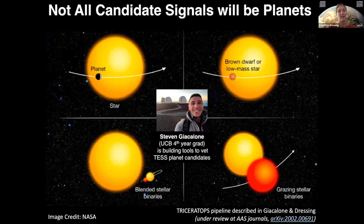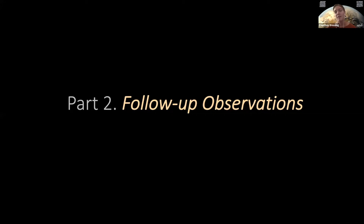TESS is set up to try to validate and measure the masses of at least 50 planets smaller than Neptune. The point of this goal is to figure out how planet composition changes as you go to smaller and smaller planets and try to figure out which of those planets might potentially be like Earth. In order to figure out which TESS objects of interest are real planets, the TESS team has developed the TESS follow-up observing program, which is divided into subgroups that each do part of the analysis required to figure out which planets are real.